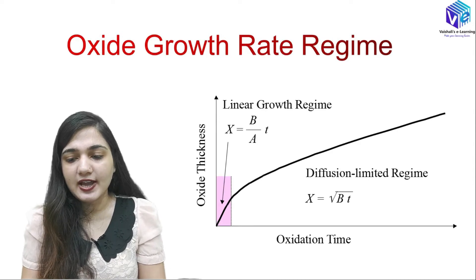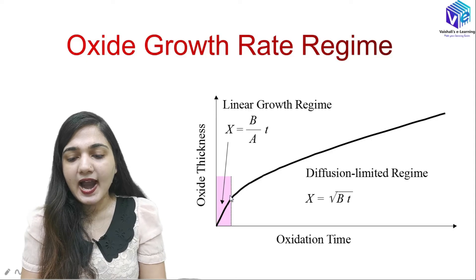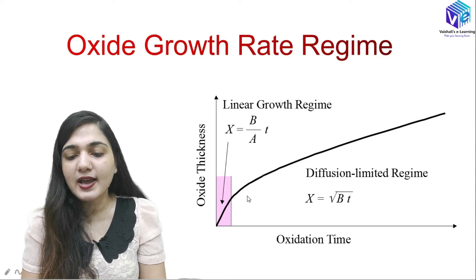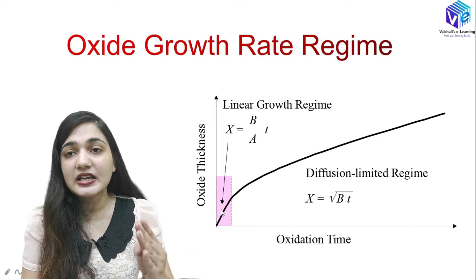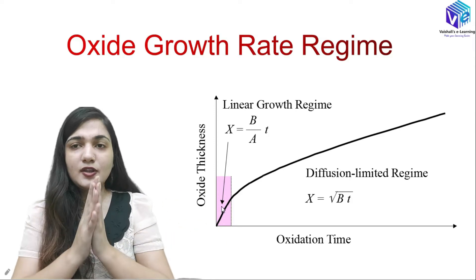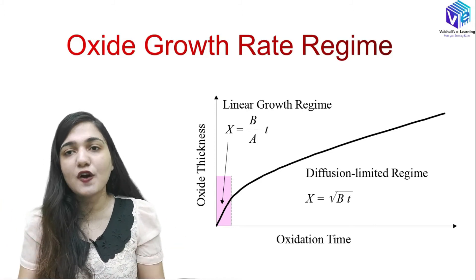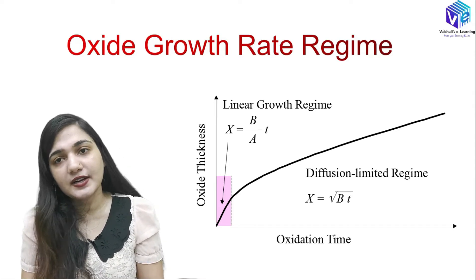In the Deal and Grove model, when x equals (B/A)·t, we have the linear growth regime, and when x equals √(Bt), we have the parabolic regime — this is called the diffusion-limited regime. As the thickness of the SiO2 layer increases, the rate of its formation decreases because of diffusion. You can refer to the previous videos on the Deal and Grove model for the full derivation.